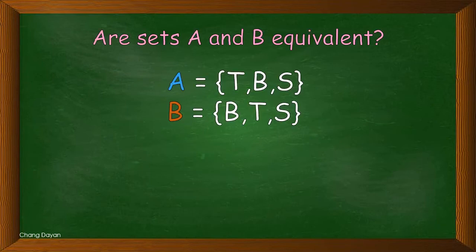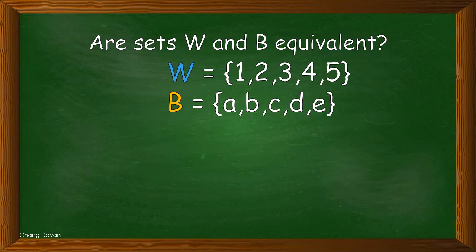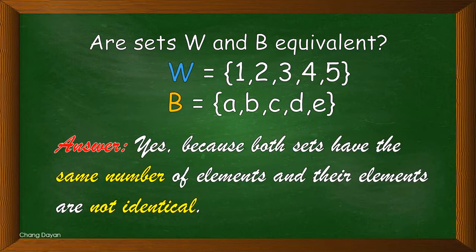Now let us answer this: are sets A and B equivalent? For set A we have letters B, B, S; for set B we have B, C, S. The answer is no, because although they have the same number of elements, the elements are identical — they share the same B and S — making them not equivalent but equal. Next, are sets W and B equivalent? Yes, because they have the same number of elements and their elements are not identical. Set W has numbers while set B has letters.